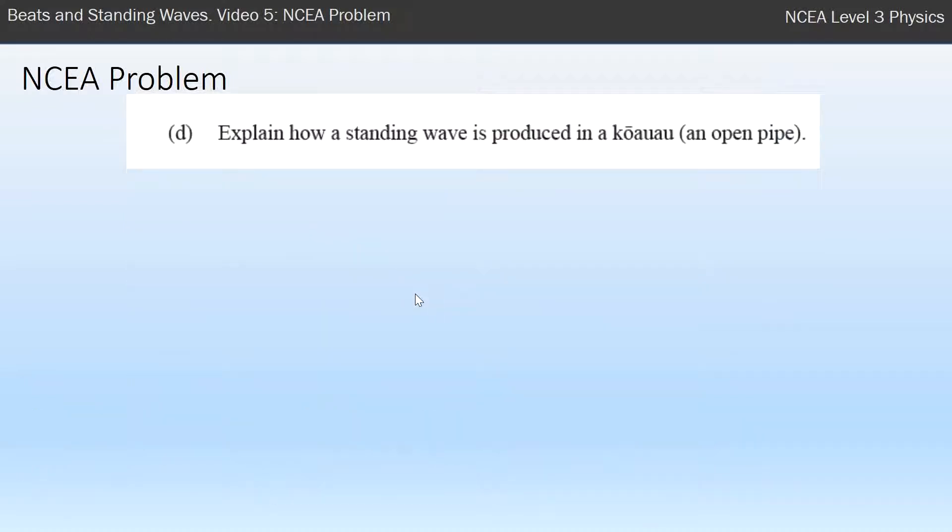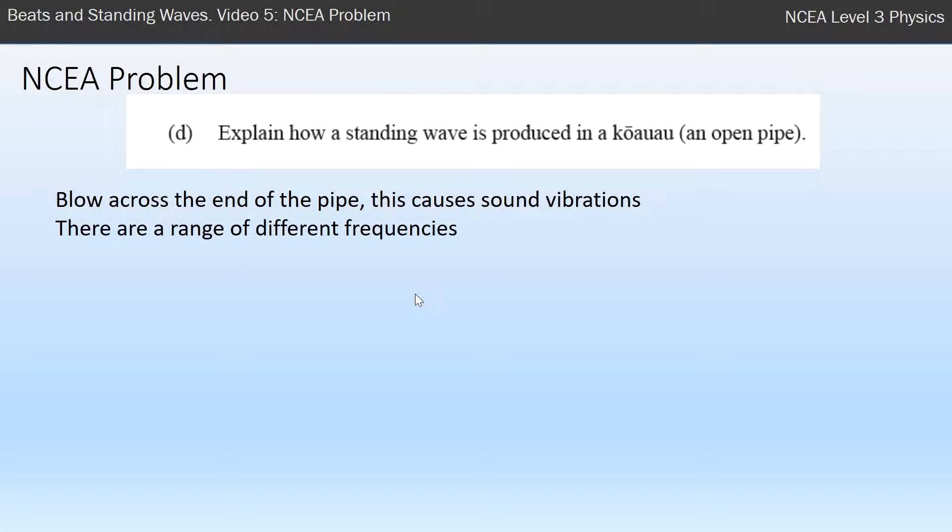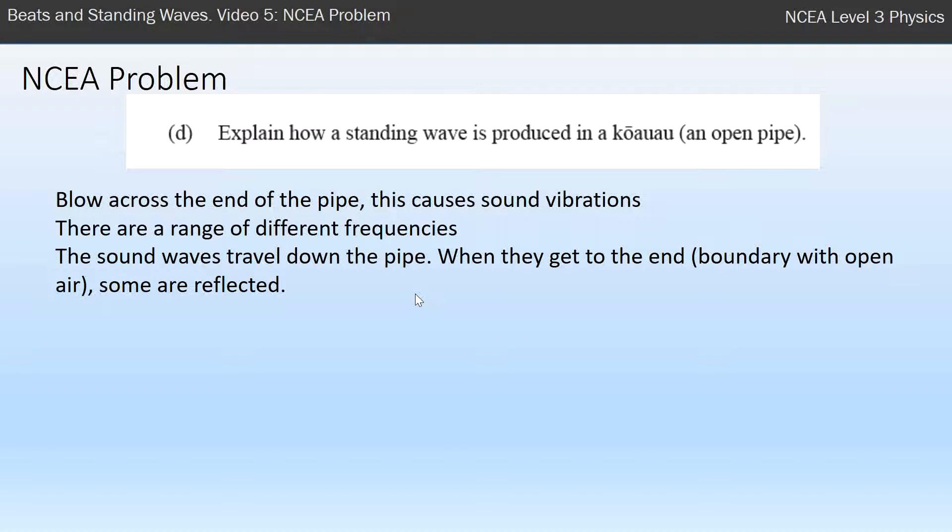Part D: Explain how a standing wave is produced in a kōauau, an open pipe. We start by blowing across the end of the pipe. This causes sound vibrations. When we do that, there's a range of different frequencies produced. The sound waves travel down the pipe, and when they get to the end—the official word for it in physics is a boundary with the open air—some of those waves are reflected.